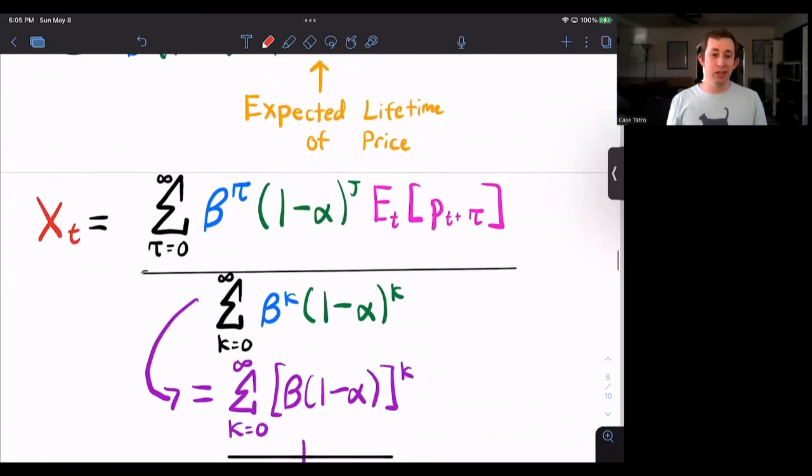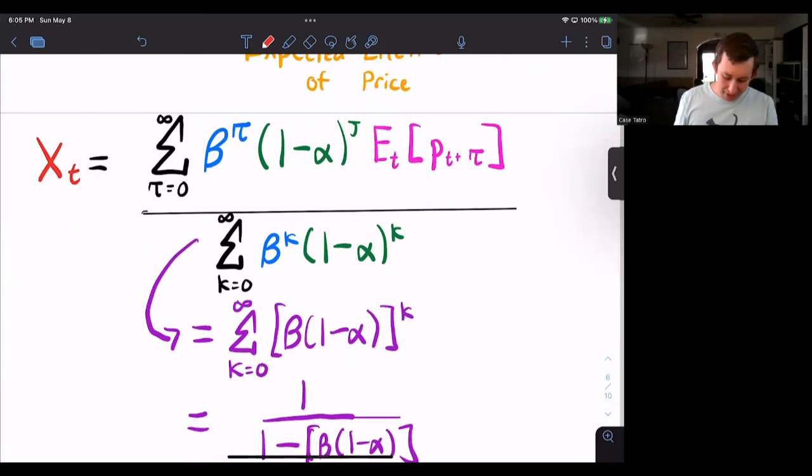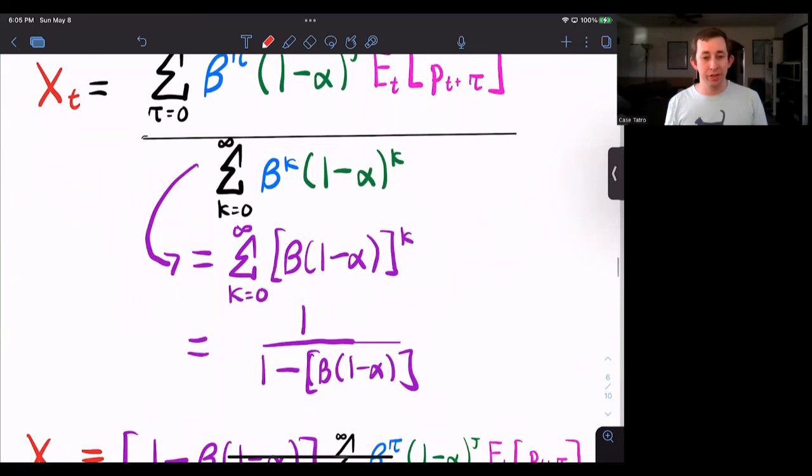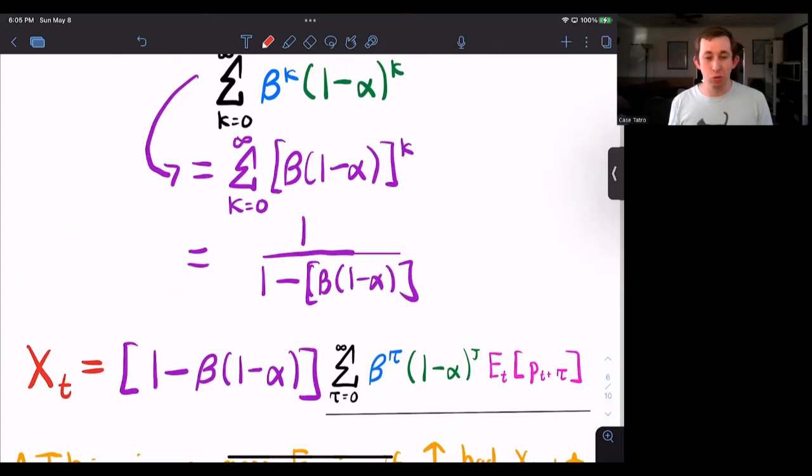So I'm just going to collect those terms into some summations right here. Then I'm going to work on the denominator first because I can really transform this into beta times one minus alpha all to the K and use my trick with infinite series where the factor is less than one. I get to one over one minus beta times one minus alpha.